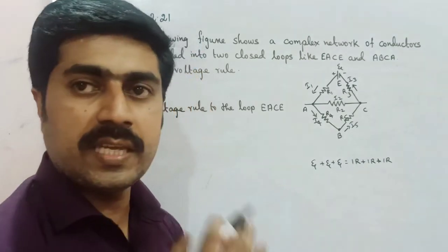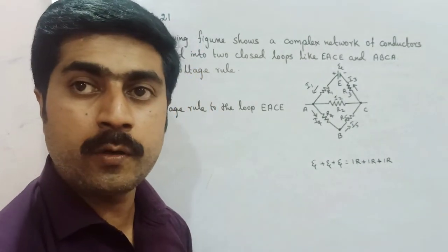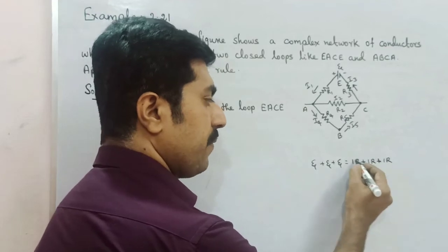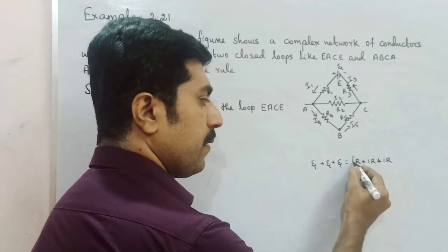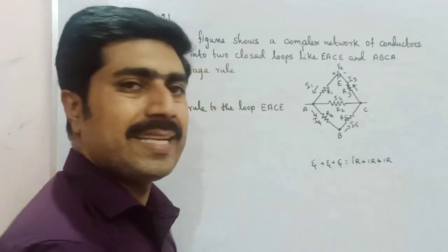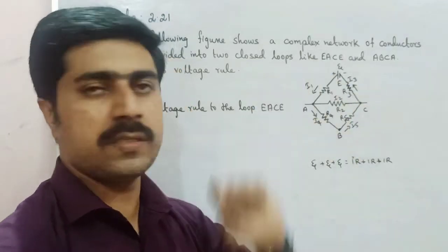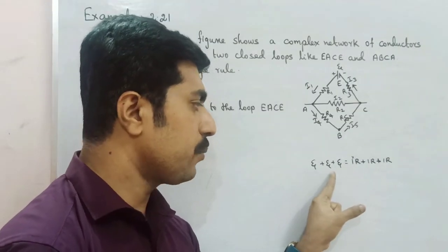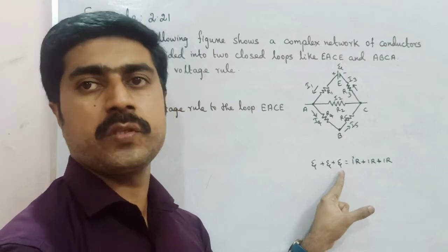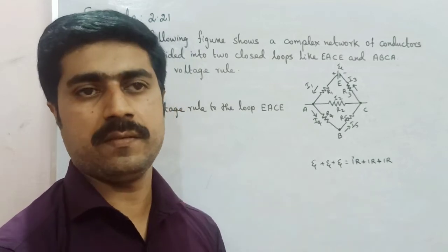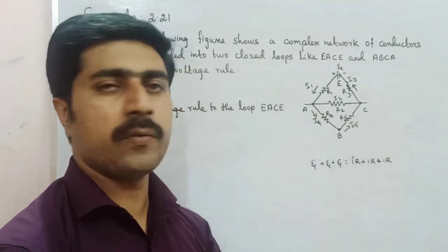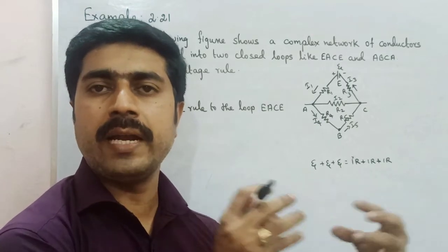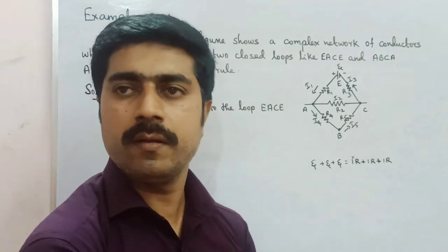The algebraic sum of the product of current and resistance in any closed circuit is equal to the algebraic sum of the EMFs of the cells. That closed circuit is equal to EMFs of the cells. It's very simple.